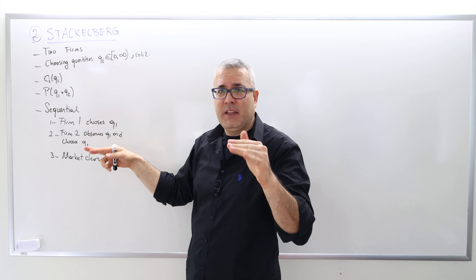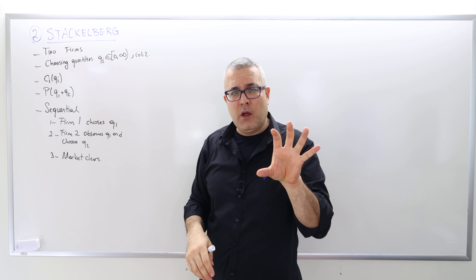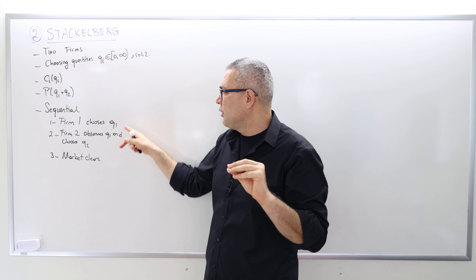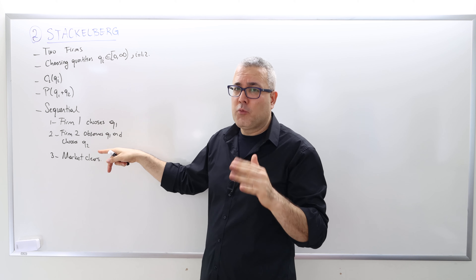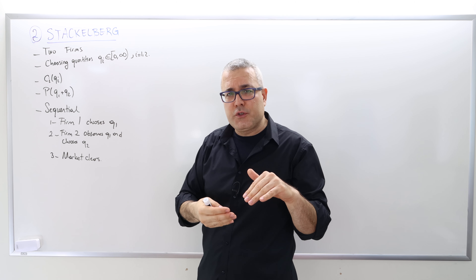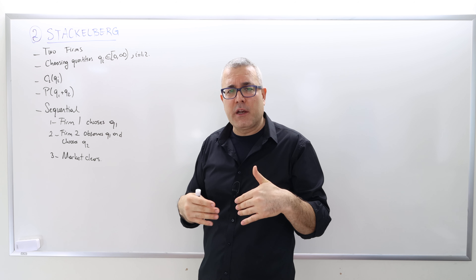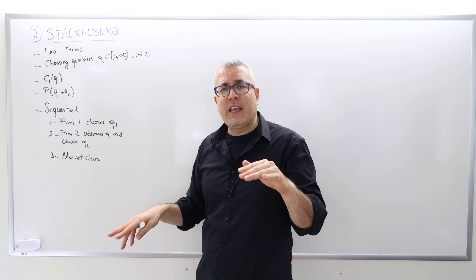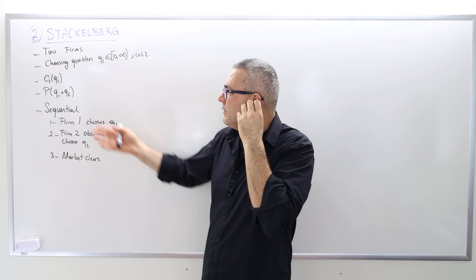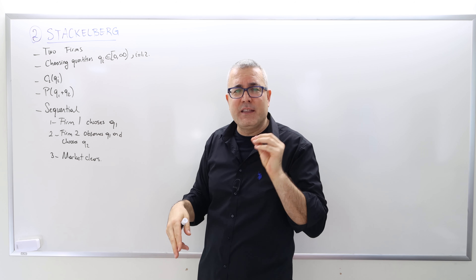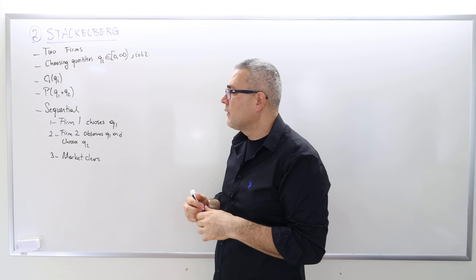The big difference with Cournot is the sequentiality. Here's the timeline: firm one moves first and chooses its quantity Q1. Then firm two observes the choice of firm one — Q1 — and then chooses its quantity Q2. The game is over; the market clears, Q1 and Q2 are revealed, the market clearing price is determined by the demand curve, and the firms enjoy the profit.